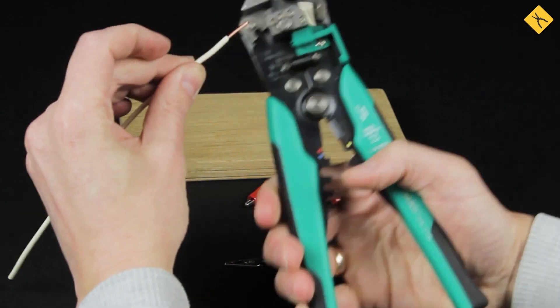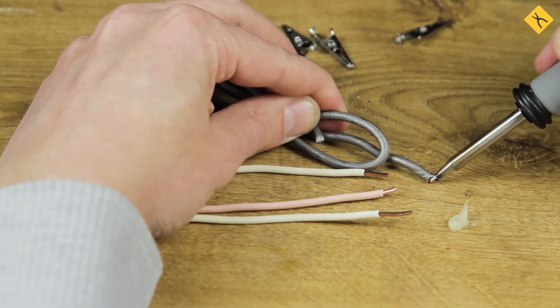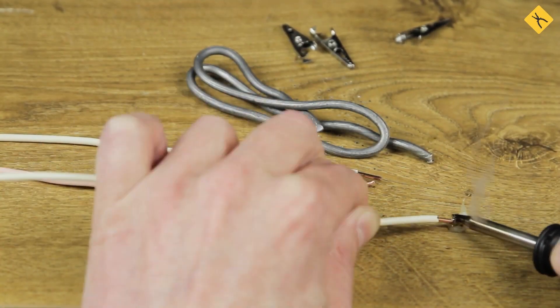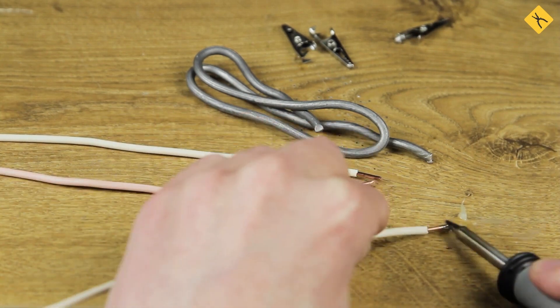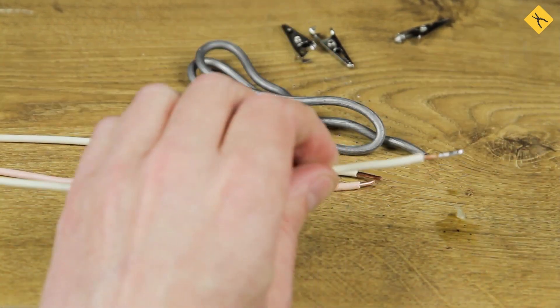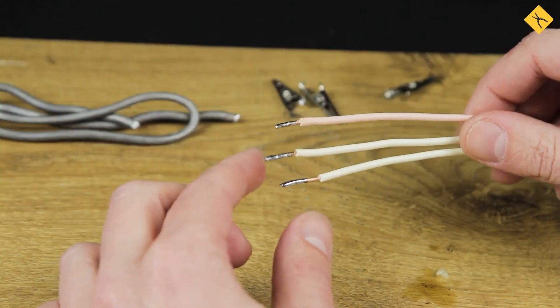Next, we are removing insulation from the wire and tinning the wire and the clamps. Solder alloy adheres well to the tinned surface, which makes soldering the clamps to the wire much easier.